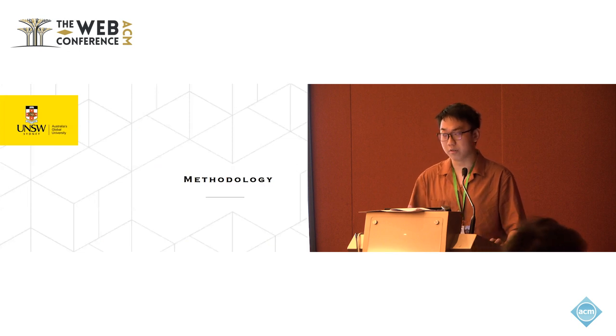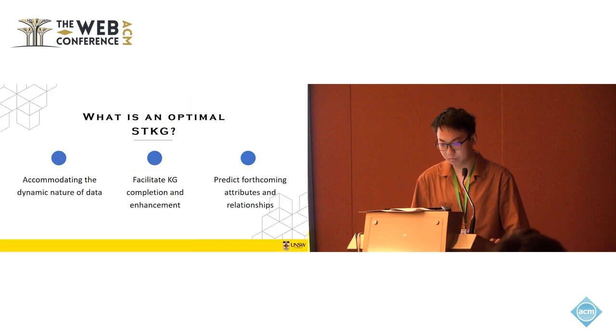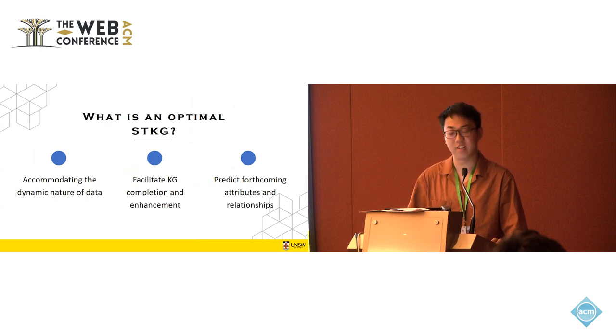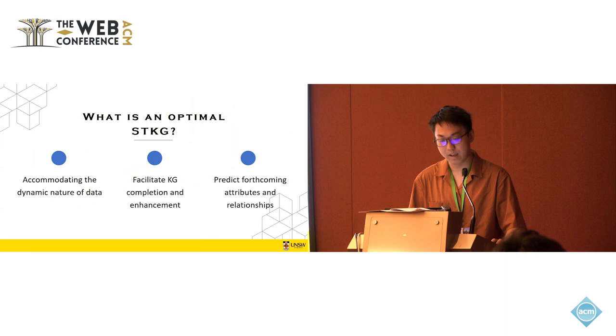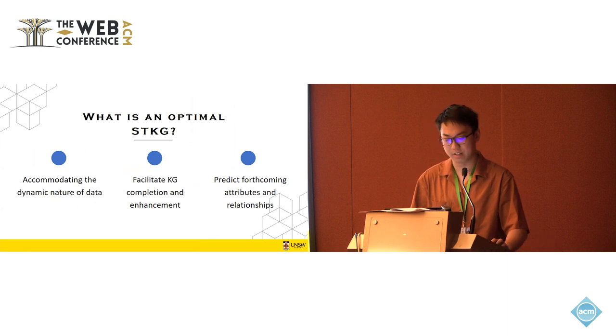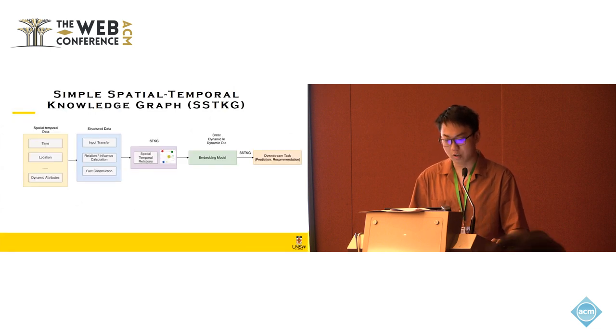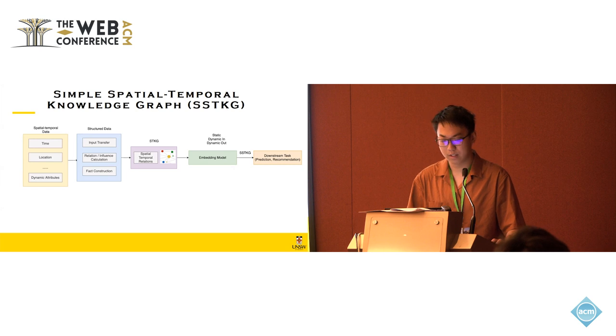So now I'll introduce the methodology part. Let's look back to our spatial temporal knowledge graph methodology. To define the problem, we aim to build an optimal spatial temporal knowledge graph which should, at first, accommodate the dynamic nature of the data, and also facilitate the completion and enhancement of the KG after the initial construction. We also need a spatial temporal knowledge graph to be able to predict the forthcoming attributes of the relationship. So specifically, to solve the problem, we raised a framework: Simple Spatial Temporal Knowledge Graph, which is SSTKG.